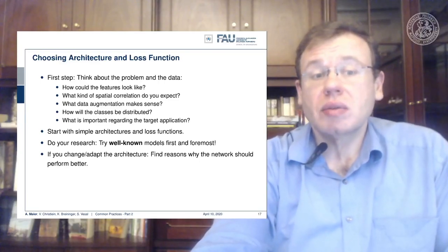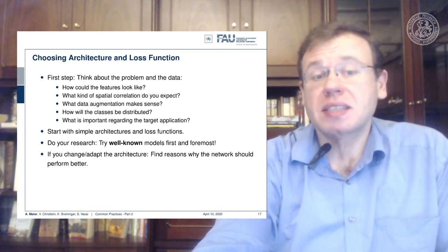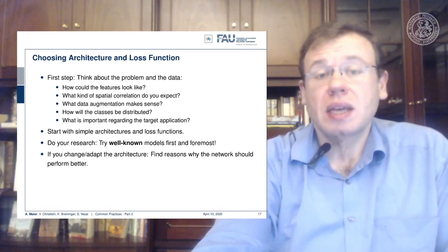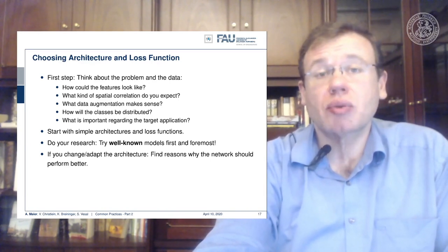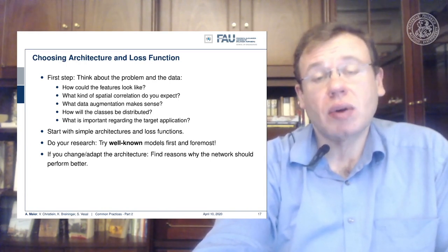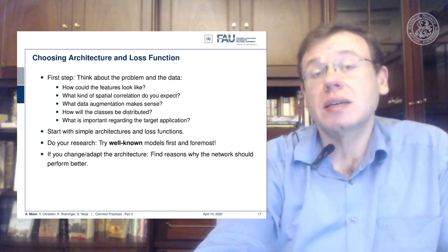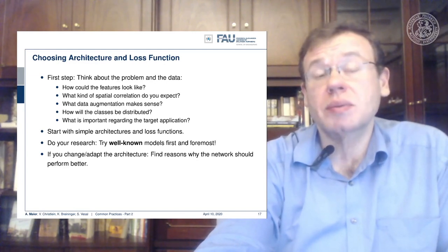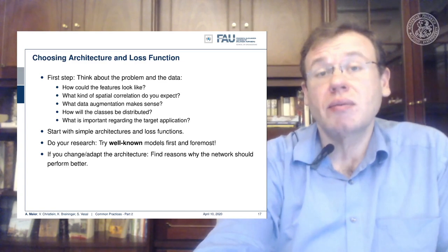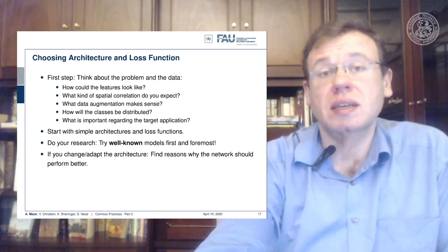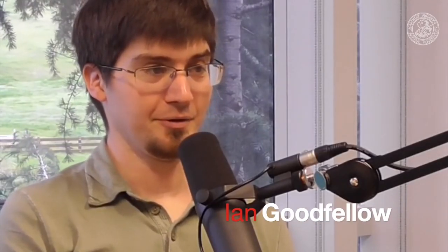You may then want to change and adapt the architecture you found in literature. If you change something, find good reasons why this is an appropriate change. There are quite a few papers that introduce random changes into the architecture, and it later turns out that the observations were essentially random — they were just lucky or experimented enough on their own data to get the improvements. So far that hasn't really held up on other datasets.